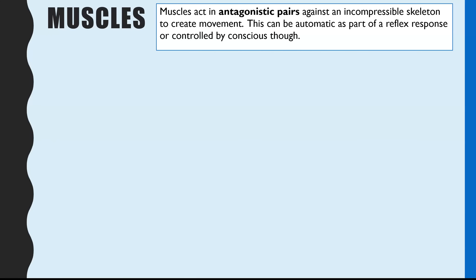Muscles — and we're thinking about skeletal muscles here — occur in antagonistic pairs. What that means is for each part of the skeleton there are two muscles attached and they'll always work in opposite ways. As one contracts, the other relaxes, and this will then cause the movement of that part of the skeleton. This can be an automatic part of a reflex response, meaning you don't think about it, or it can be controlled by conscious thought.